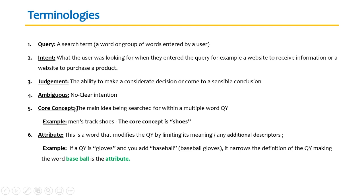Attributes are simply words that modify the query by limiting its meaning with additional descriptors. For example, if your query is 'gloves' and you have a sub-query 'baseball gloves,' the word 'baseball' narrows the definition of the query — so baseball becomes the attribute. Read your queries to understand: what is my core concept and what is my attribute? Specificity refers to the quality of belonging uniquely to a particular subject. If I'm searching for 'shoes' and I get the keyword 'women's shoes,' shoes is the broader term and women's shoes is the narrower one.